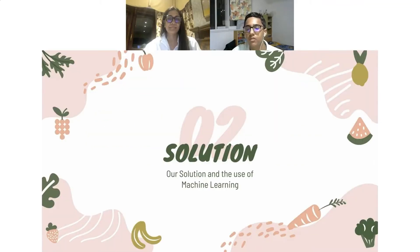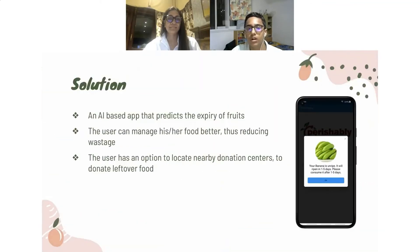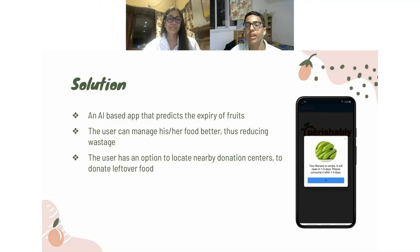Our solution is an AI-based app that predicts the expiry of fruits so that the user can manage his or her food much better, which reduces wastage and throwing away food. The user also has an option to locate nearby food donation centers where they can donate leftover food.